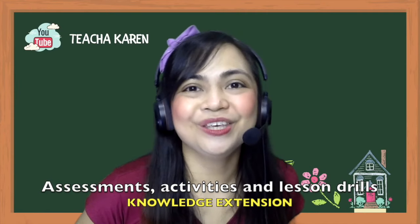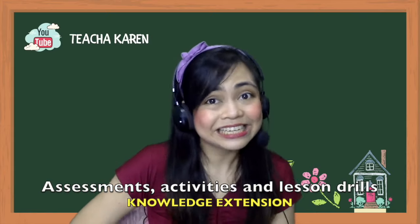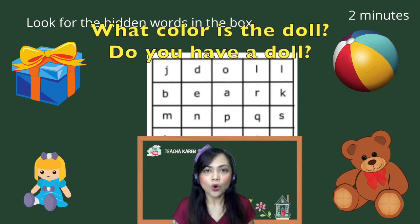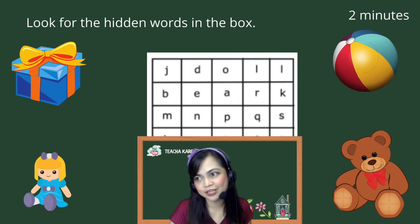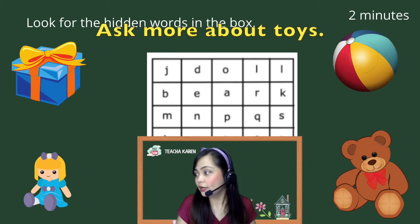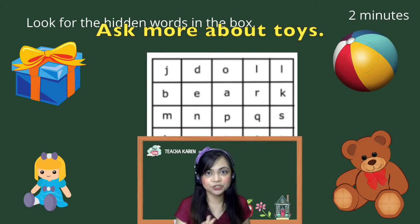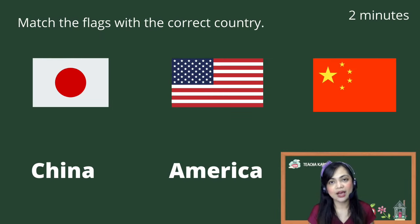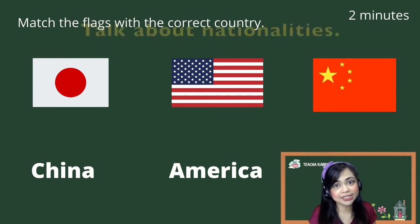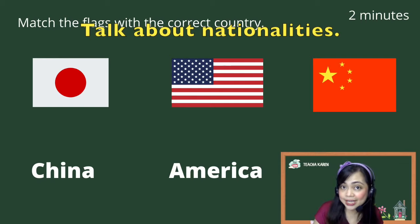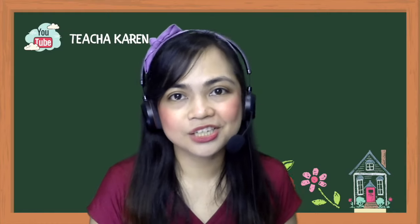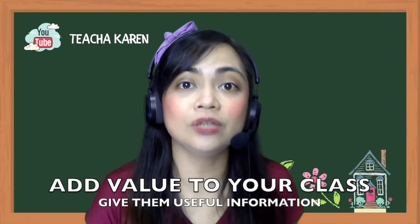Knowledge extension doesn't stop there — you can even do it during achievement tests, class assessments, or exercises. For a crossword puzzle, you could ask: what color is the doll? Do you have a doll? Or if they finish finding all the words in 10 seconds, talk more about toys — show a toy train or toy robot and introduce those concepts. Another example is an assessment about flags and countries: talk about colors, or introduce what we call people who live in certain places — people in America are Americans, people in China are Chinese.